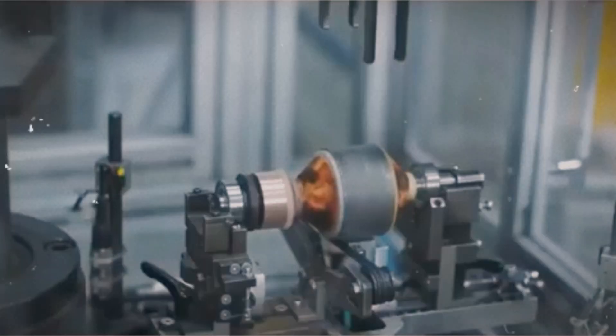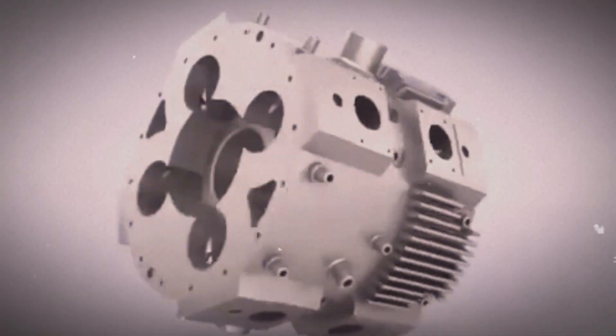Instead of relying on the back-and-forth motion of pistons, a rotary engine uses a spinning triangular rotor to compress and ignite fuel. The promise was a simpler, smoother, and potentially more efficient engine.